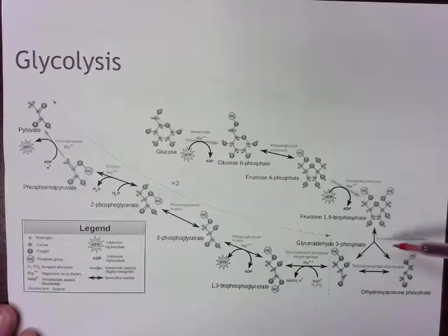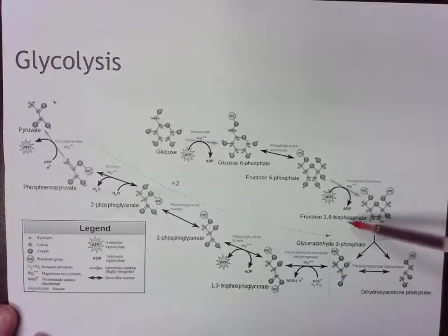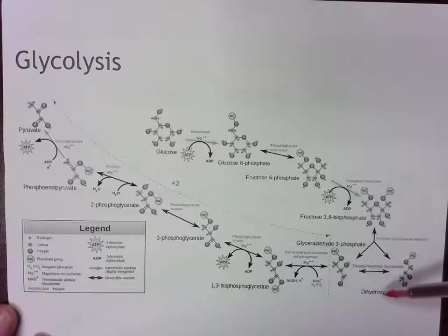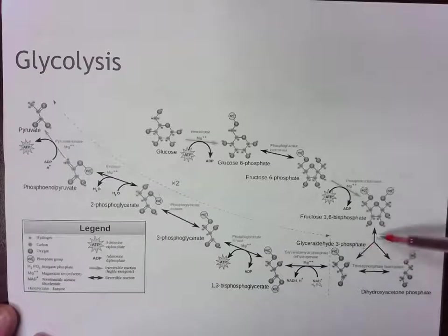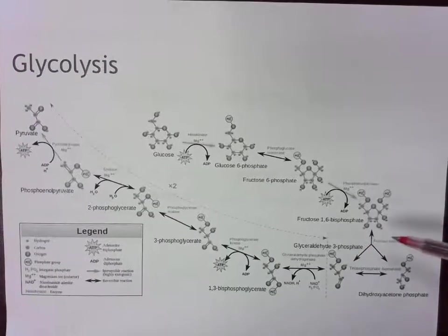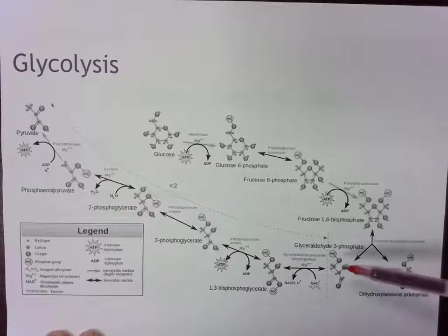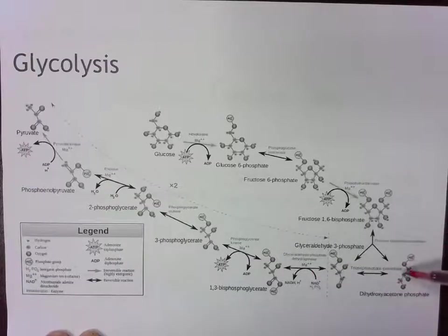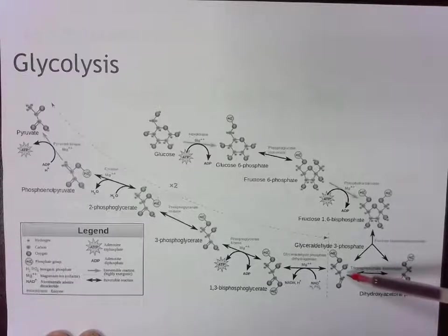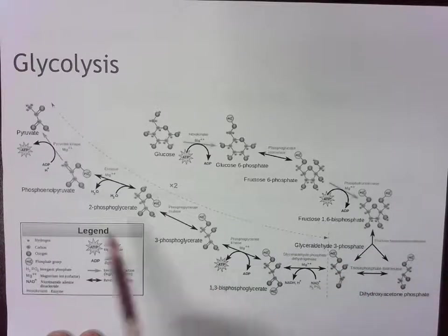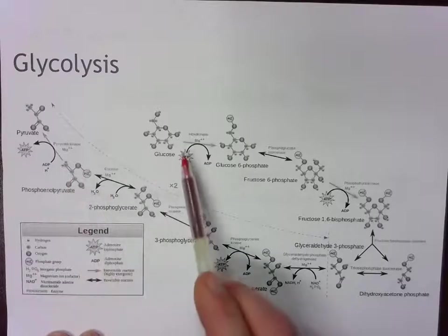And then we see this step here where we have a splitting occur. Fructose 1,6-bisphosphate gets split into dihydroxyacetone phosphate and glyceraldehyde 3-phosphate. Nothing happens there in terms of energy or reducing power, so there's nothing really to note there as far as energy that's consumed or generated. In the next step, what eventually happens is dihydroxyacetone phosphate converts into glyceraldehyde 3-phosphate. So we end up with two of these. Every step from this point forward happens twice for every one glucose.